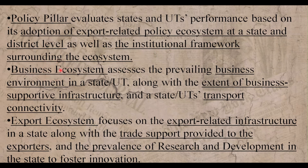The second pillar is the Business Ecosystem, which looks at the extent of business-supportive infrastructure. For example, if an IT company is established, we need building space, human resources, and tax cuts. It also considers transport connectivity and other infrastructure needed to support business activity.